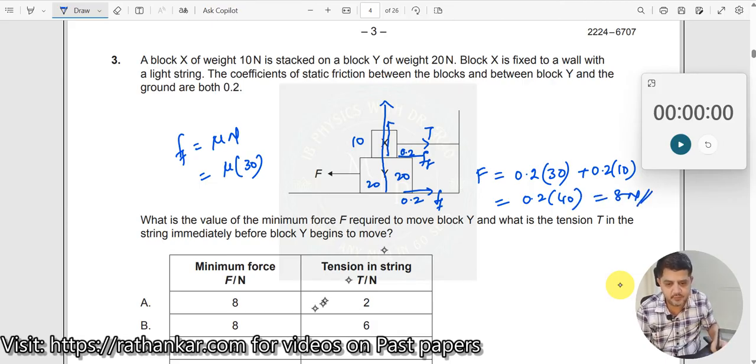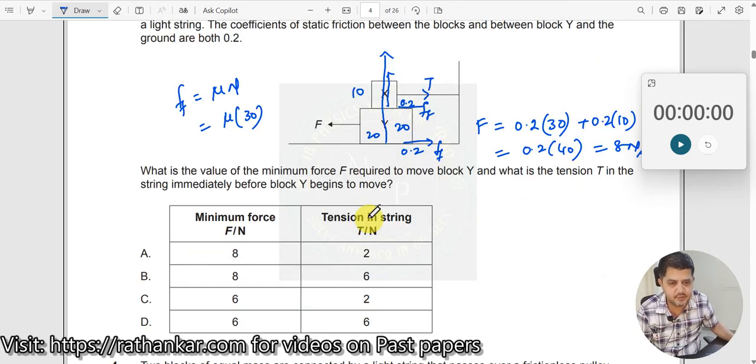So we have got the total force applied. The force, the minimum force that you need to apply so that the entire collection will now start moving is 8 Newton. So therefore, these two are incorrect, either of them should be correct.